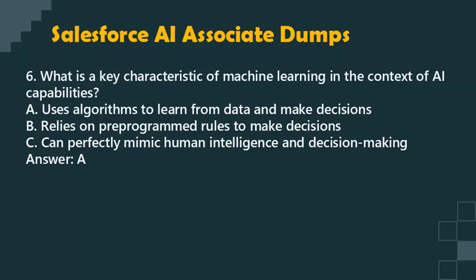Question 6: What is a key characteristic of machine learning in the context of AI capabilities? a. Uses algorithms to learn from data and make decisions. b. Relies on pre-programmed rules to make decisions. c. Can perfectly mimic human intelligence and decision making. Answer: A.